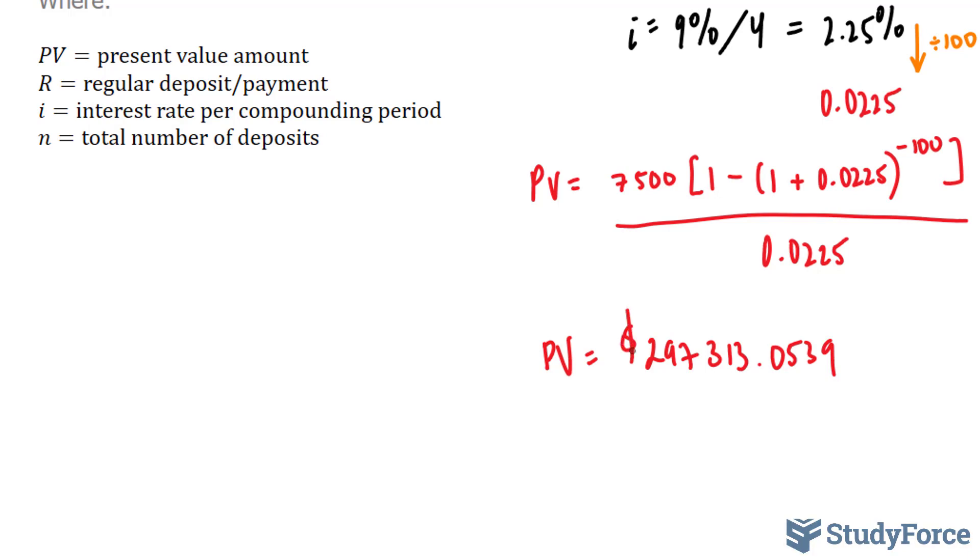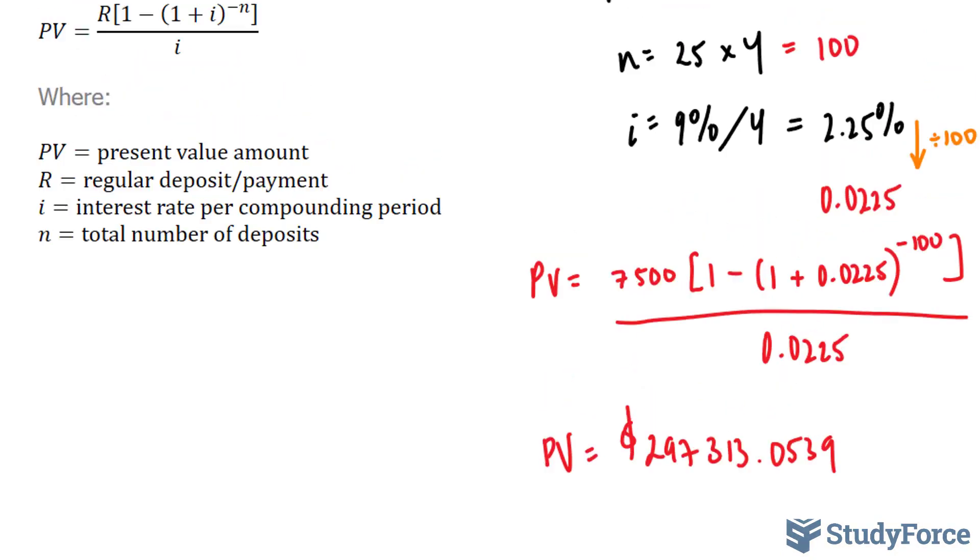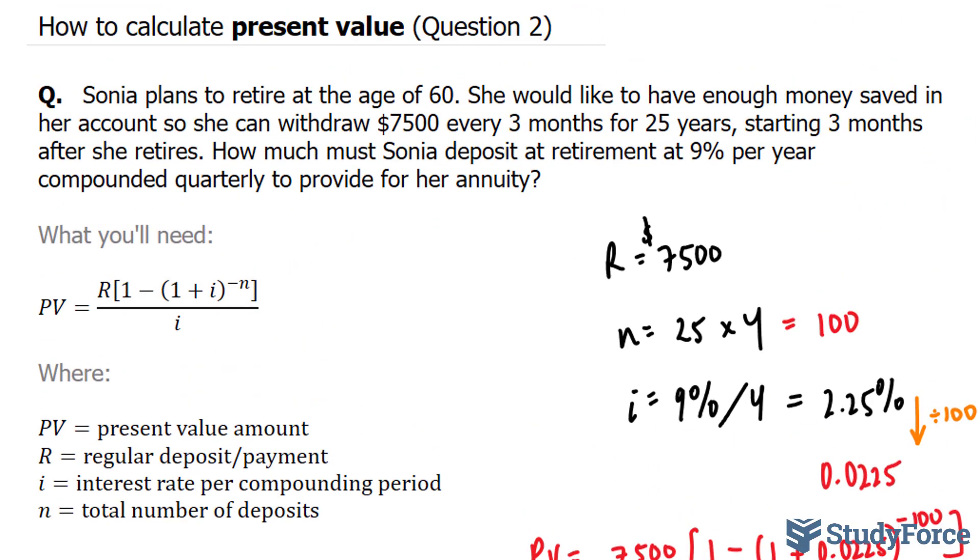So let's talk about what this means for Sonia. This means that Sonia needs to put in this amount of money into her bank account at the age of 60 so that she can withdraw $7,500 every three months until she's 75 years old. So there you have it. That is how to calculate the present value.